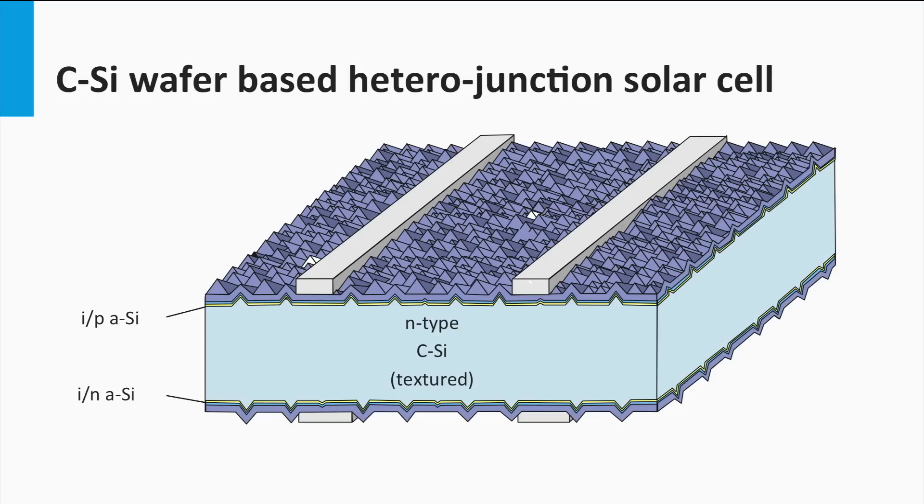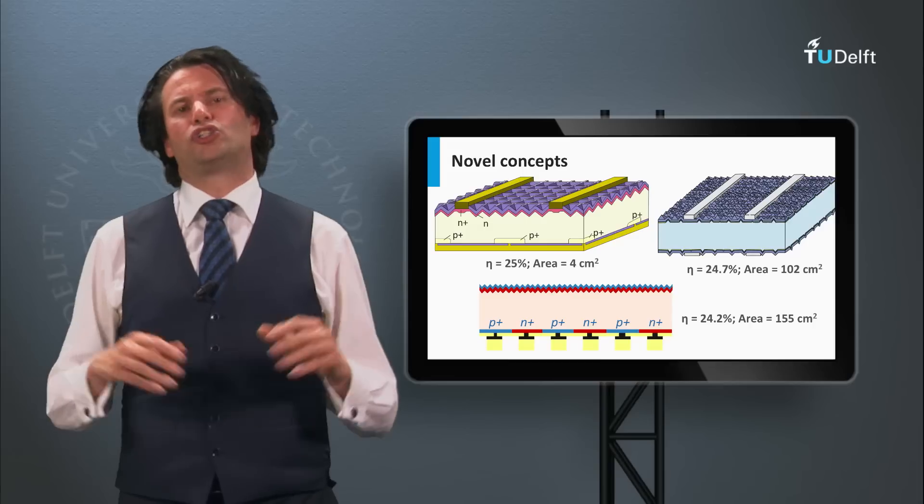Another important advantage of the HIT solar cell is that the amorphous silicon layers are deposited using cheap and straightforward plasma-enhanced chemical vapor deposition technology at low temperatures, not higher than 200 degrees Celsius. This means that making the front surface and the back surface field in this type of solar cells is very cheap. Furthermore, this technology allows to use the N-type wafers.